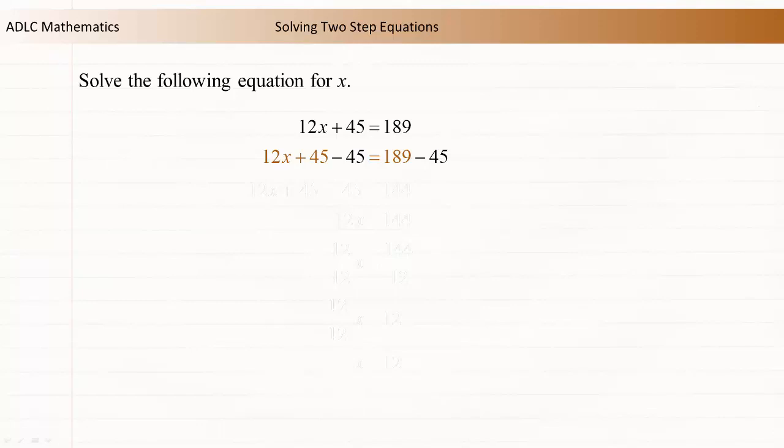Step 1: Undo the addition operation by subtracting 45 from both sides of the equation. This operation eliminates 45 from the left side. On the right side, 189 - 45 = 144. So, 12x = 144.